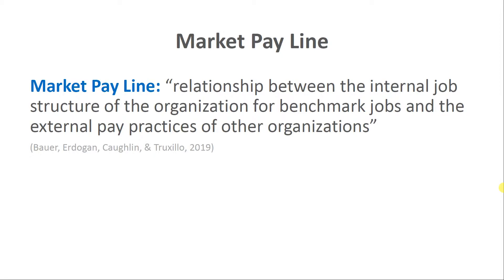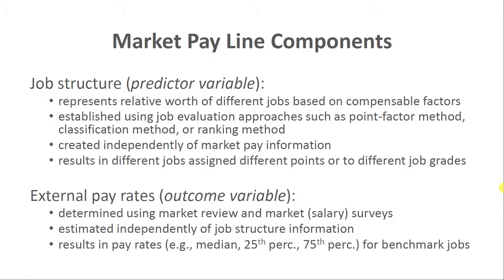A market pay line refers to the relationship between the internal job structure of the organization for benchmark jobs and the external pay practices of other organizations. There are two real components of a market pay line — two different variables: a predictor variable and an outcome variable. In the context of a market pay line, the predictor variable is something that indicates the job structure.